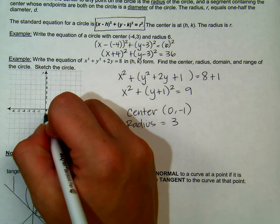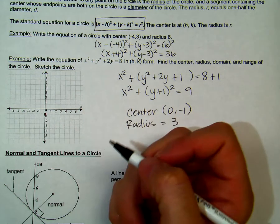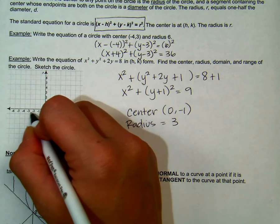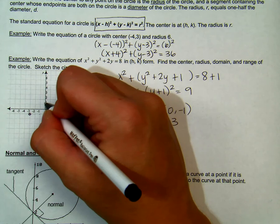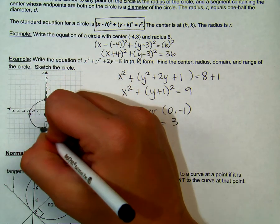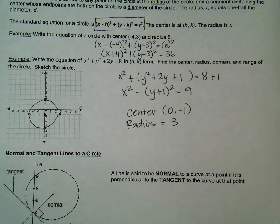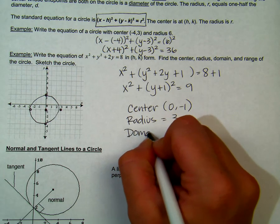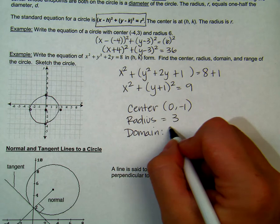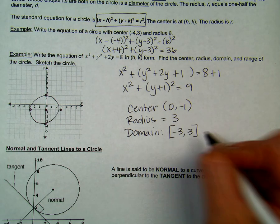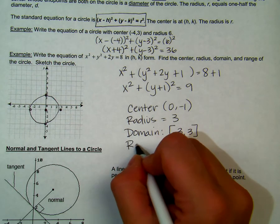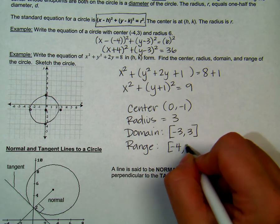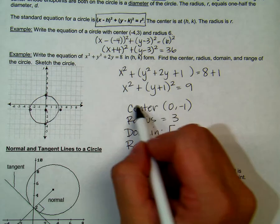Before we find domain and range, let's sketch the circle. We start by plotting the center at (0, negative 1). Since our radius is 3, we go left, down, up, and right 3 units. Now that we have our circle sketched, our domain — the x coordinates — is going to be from negative 3 to 3. Be sure to include brackets here. And our range — the y values — is going to be from negative 4 to 2.